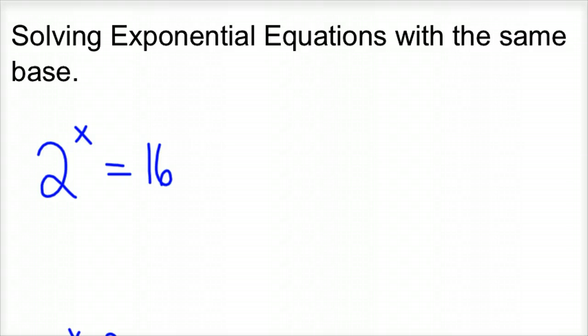Which is fairly easy. You can kind of think about that to make 16, that's 2 times 2 times 2 times 2. 2 times 2 is 4, 4 times 2 is 8, 8 times 2 is 16. So we know the answer is 2 to the 4th power, so x is equal to 4.